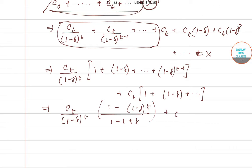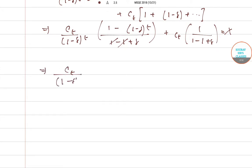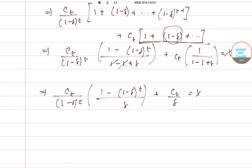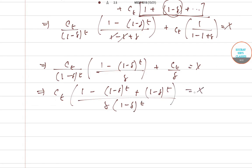This is an infinite series, and we know that for an infinite geometric series the summation is 1/(1−r), where r = (1−δ), so we write it as 1/δ. For the finite geometric series portion we write it as (1 − (1−δ)^t)/δ. Taking ct as common, we get ct·[(1 − (1−δ)^t) + (1−δ)^t] / δ equal to x, and since (1 − (1−δ)^t) + (1−δ)^t = 1, these terms cancel each other out.